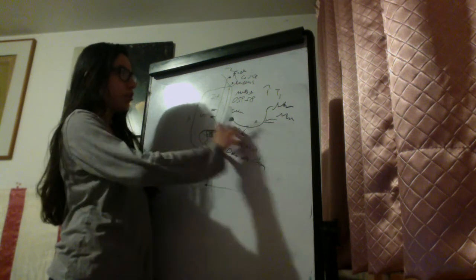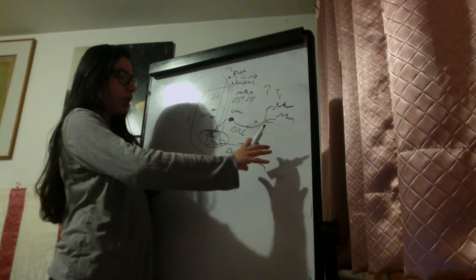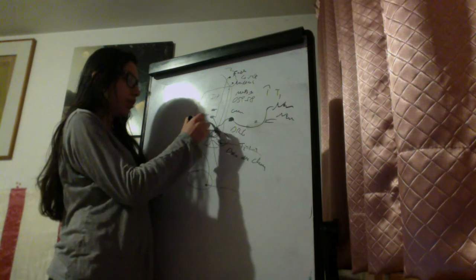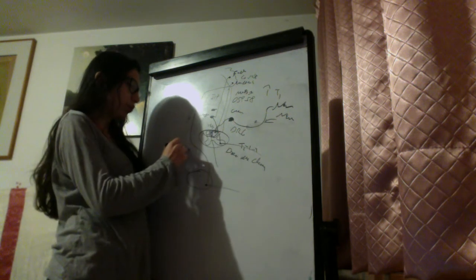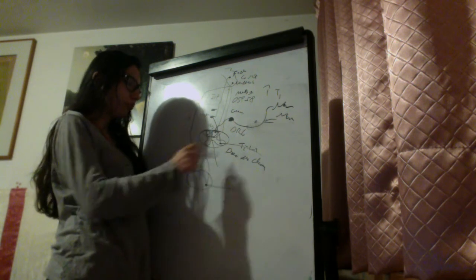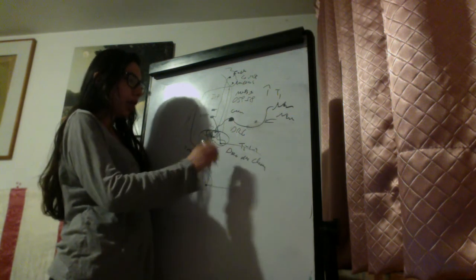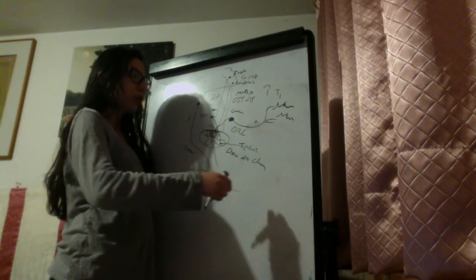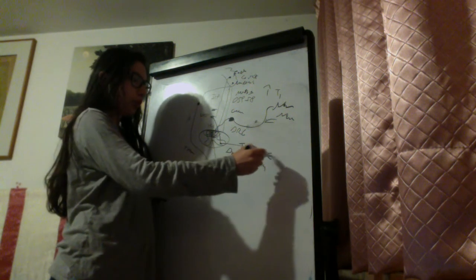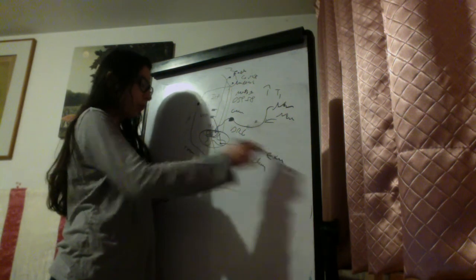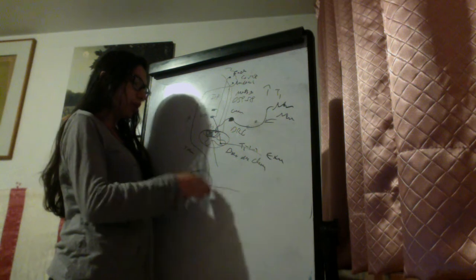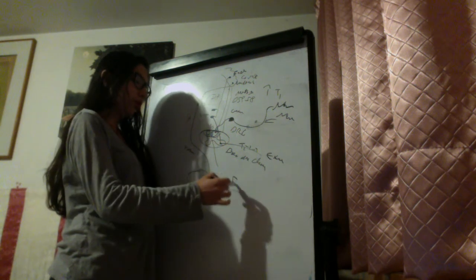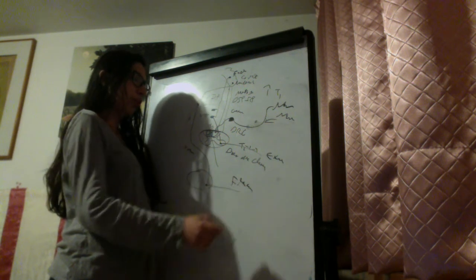The vestibulospinal tract goes mainly to the lower motor neuron and primarily to extensor muscles. The rubrospinal tract, via the lower motor neuron, goes mainly to flexor muscles of the upper limb.